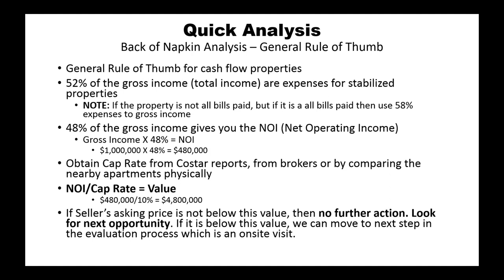This is a quick analysis — what we call a back-of-napkin analysis. This is quick and dirty; maybe spend five to ten minutes on it. Before you go on site, this quick analysis needs to be done to determine if an on-site visit is warranted. Generally, 52% of the gross income — also referred to as total income or gross revenues — are expenses for stabilized properties. If the property is not stabilized, skip this step and go through the full evaluation process.